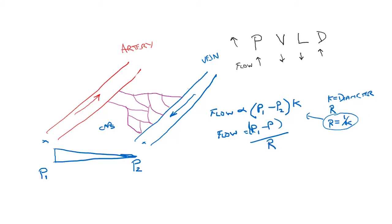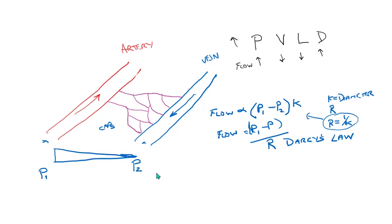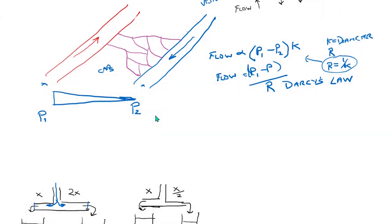We can write it as: flow is equal to P1 minus P2, the difference in pressure, all over resistance. And that is Darcy's law of flow. Can we expand on this any further?